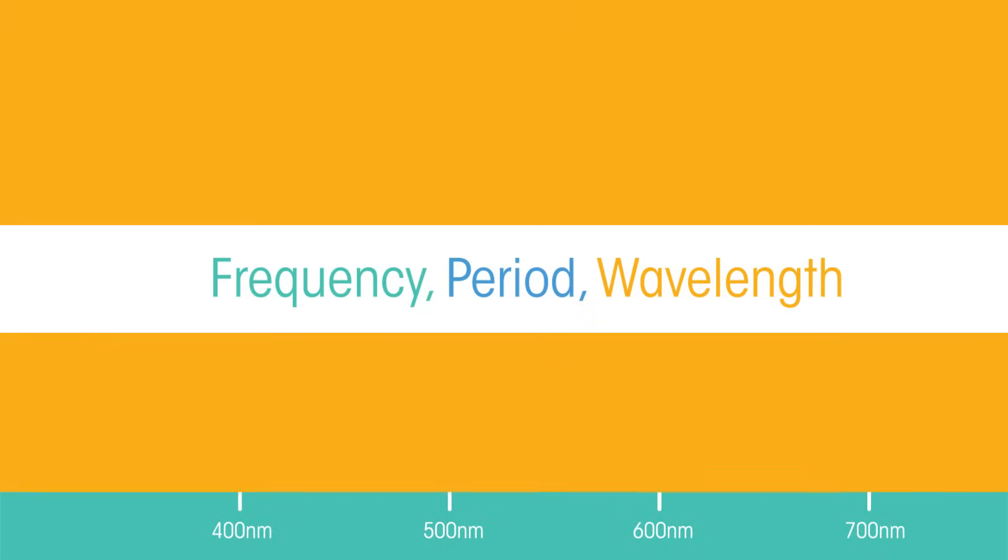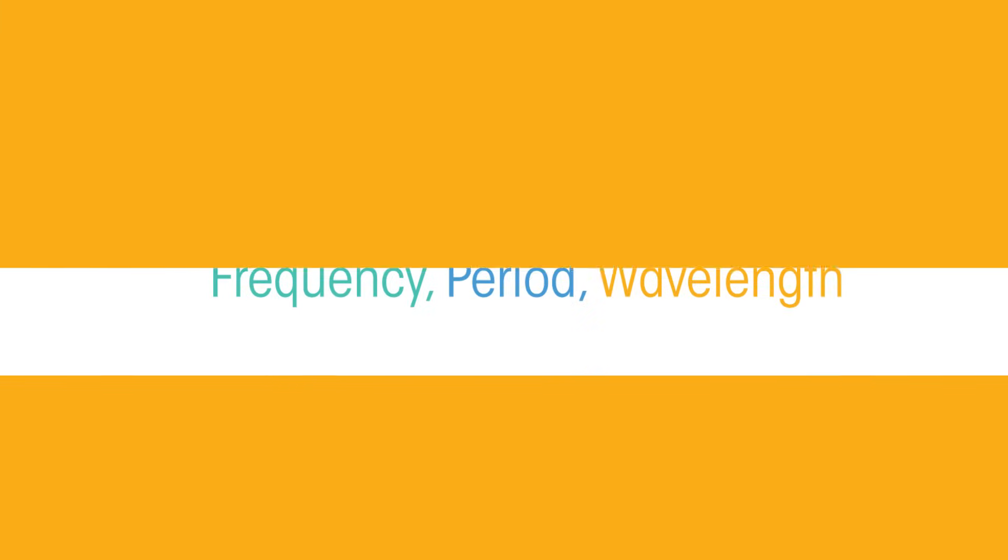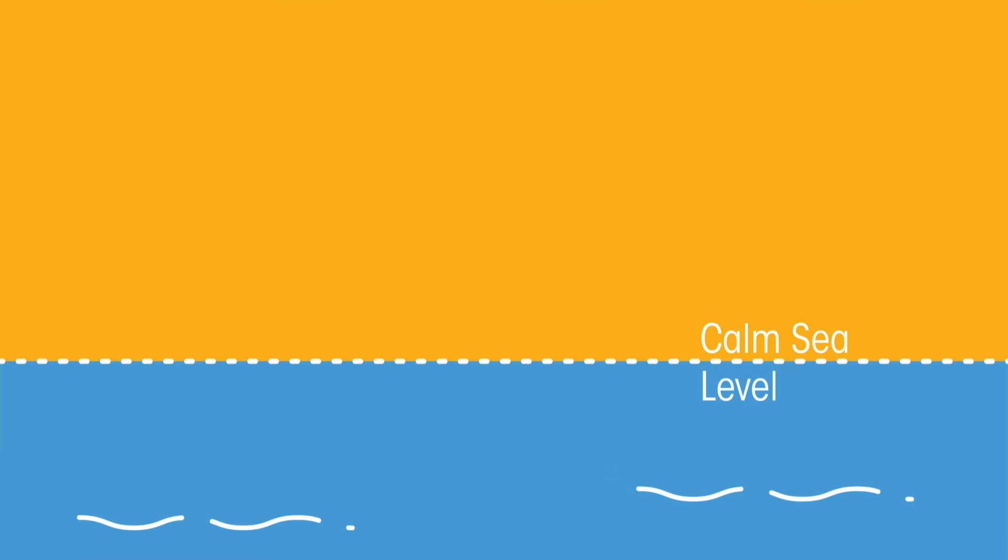So we've looked at the frequency, period and wavelength so far. Let's finish with amplitude. As waves travel, they create disturbance. The amplitude of a wave is the distance from the maximum disturbance to the undisturbed position. Think of a very flat sea, and then an incoming wave. The amplitude is the height of the top of the wave from the flat sea.